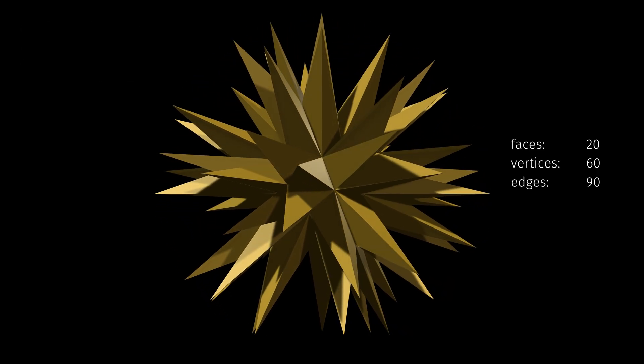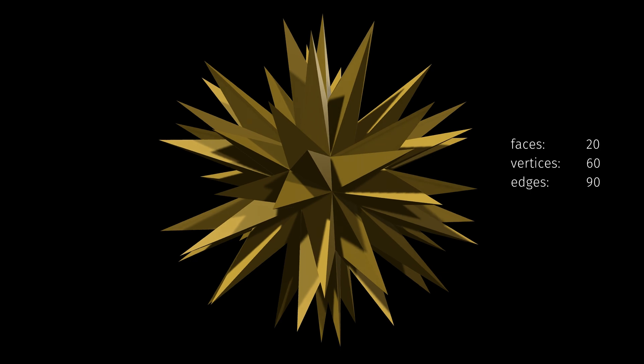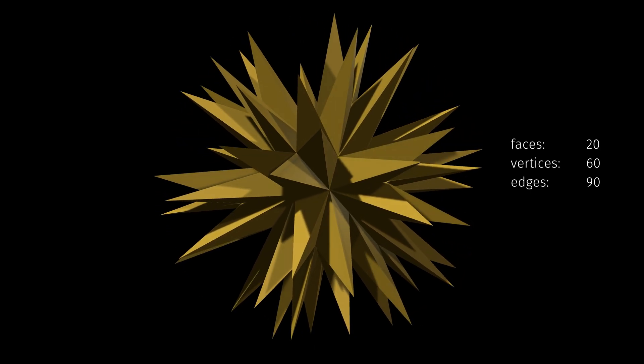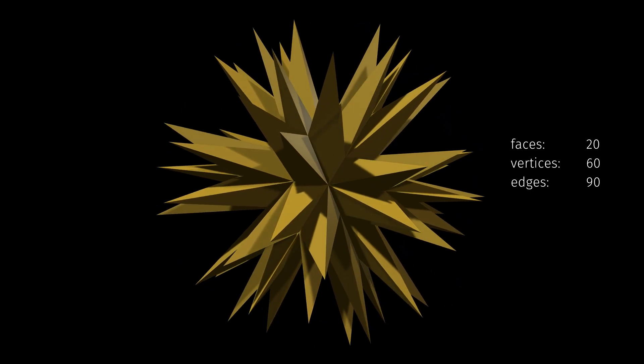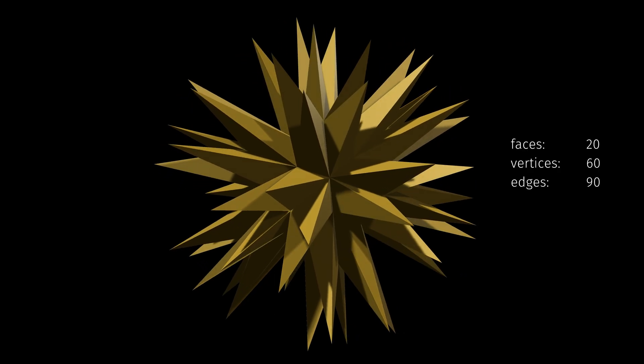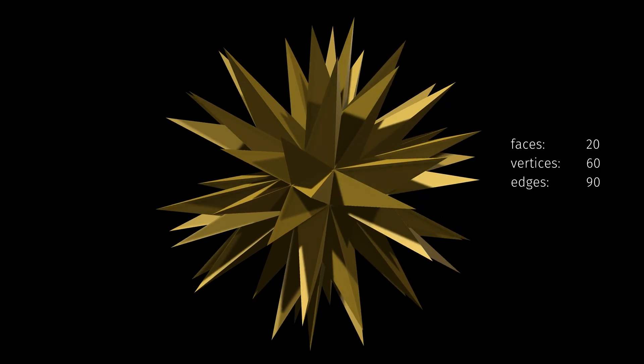It's also very close to being a regular polyhedron. It has edges of two different lengths. If the vertices could be adjusted so that the faces became regular enneagrams it would be regular, but this turns out to be impossible.